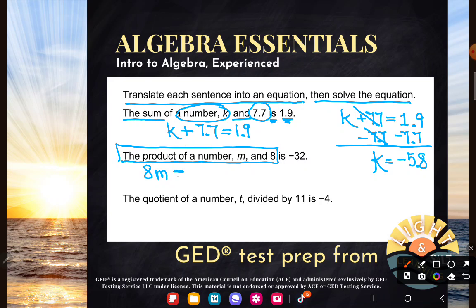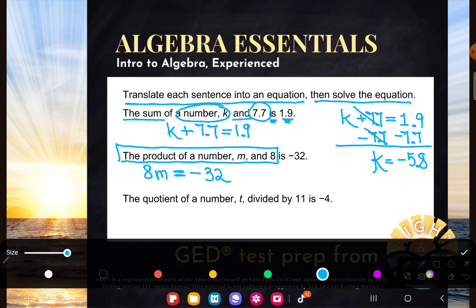And it is negative 32. So that's the first step. We wrote that equation. Not too bad. And now we're going to solve it.